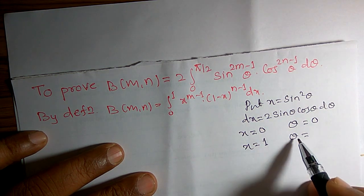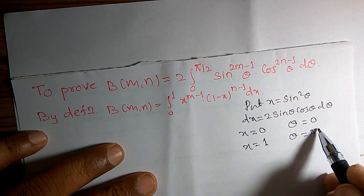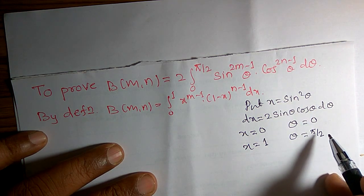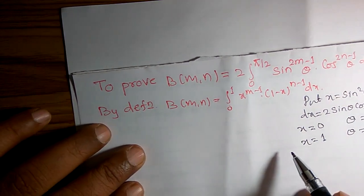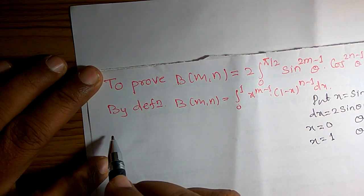When x is equal to 1, what is the value of theta? Replace theta by pi by 2. Now I am going to substitute these values.